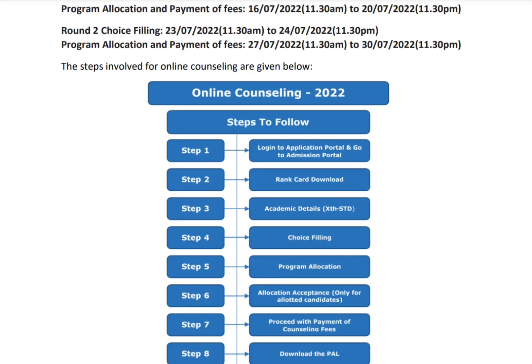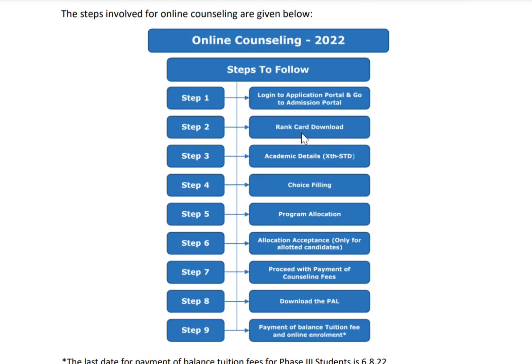Step one is log in to your application portal. Step two is download your rank card. Step three is academic details — you should submit your academic details. Step four is choice filling — you should fill in whatever colleges and courses you want to join.